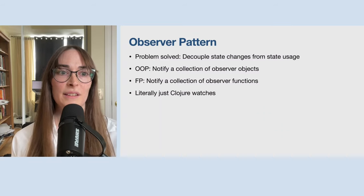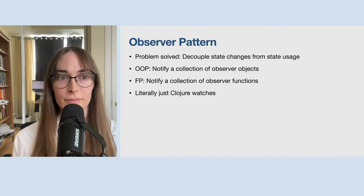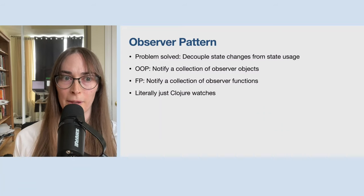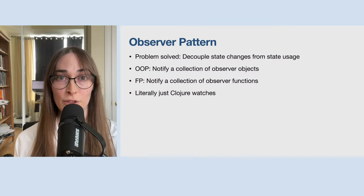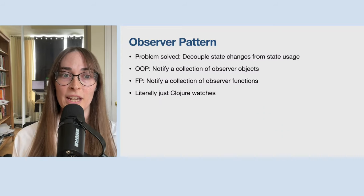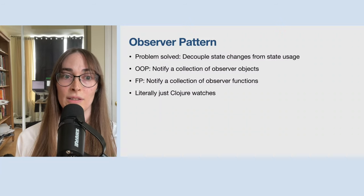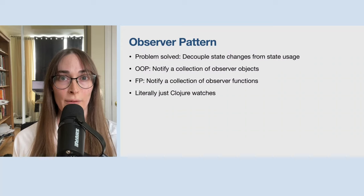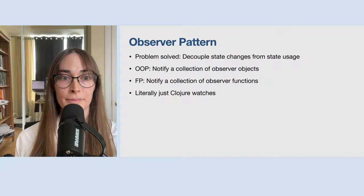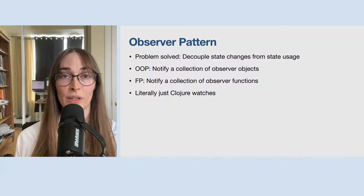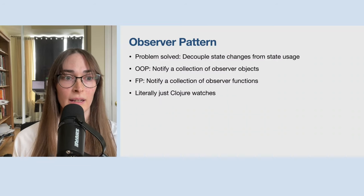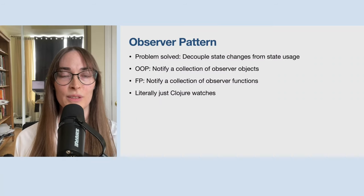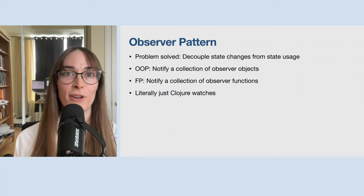Next is the observer pattern. The problem it solves is decoupling state changes from state usage. In object-oriented programming that means notifying a collection of observer objects; in functional programming that means notifying a collection of observer functions. The creator of Clojure, Rich Hickey, understood the usefulness of observers — there's a construct in Clojure called a watch, which is quite literally an implementation of the observer pattern on Clojure's reference types. Rich Hickey called them watches because people don't like object-oriented terms, but watches are basically observers.